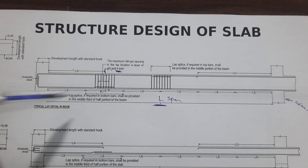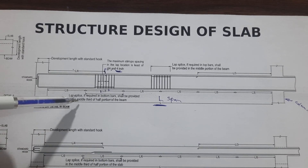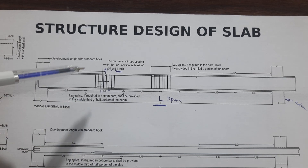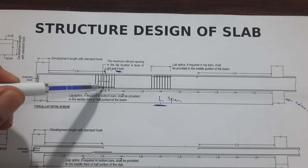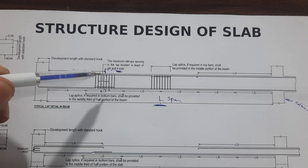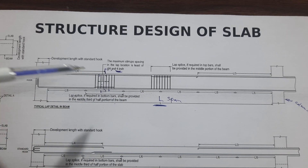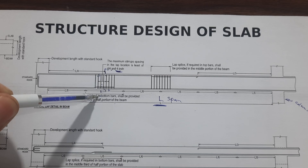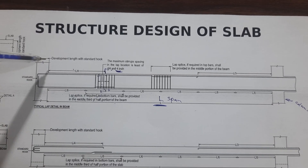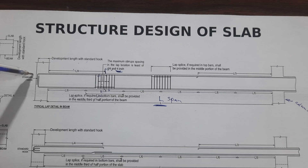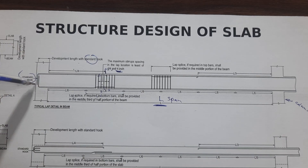This is very important: lap or splice, if required, for the bottom bars shall be provided in the middle third of the half portion of the beam. You can provide at the bottom portion — not the upper portion. You are not able to provide lapping at the upper portion, but at the bottom portion you can provide it here.